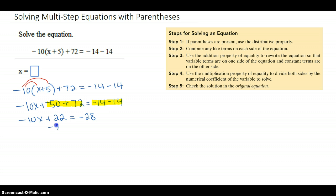So I'm going to subtract 22, or add negative 22, to both sides. The left side is just negative 10x because the 22 is canceled. The right side would be negative 50.